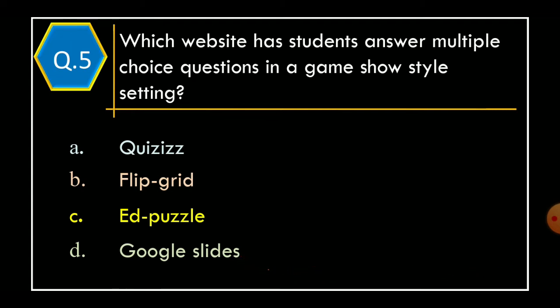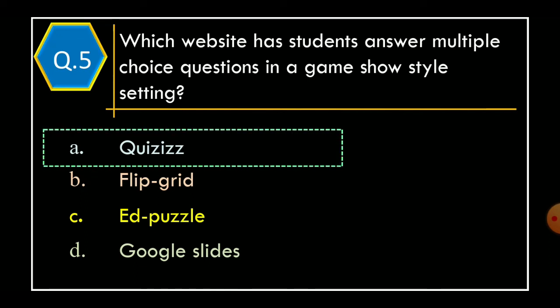Option A: Quizzes. Option B: FlipGrid. Option C: EdPuzzle. Option D: Google Slides. And the correct option is Option A: Quizzes.